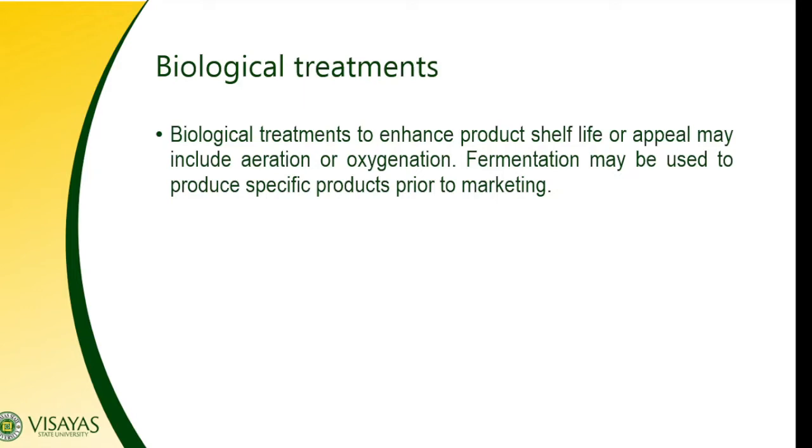We also have biological treatment. Biological treatment to enhance a product's shelf life or appeal may include aeration or oxygenation. Fermentation may be used to produce a specific product prior to marketing. Good bacteria may be introduced to enhance the food. Not all products undergo all of these operations — it depends on the product. Each of these major processing operations can be applied in combinations to achieve the final product.